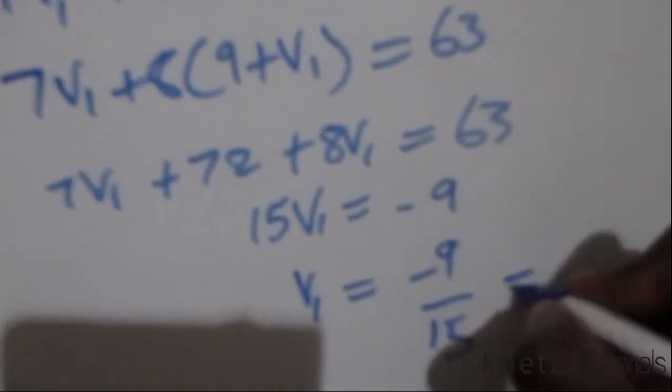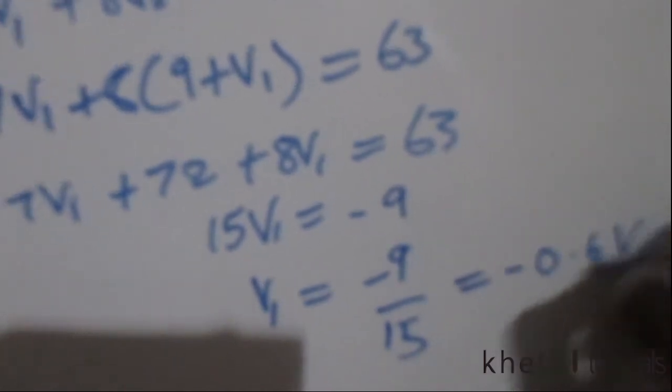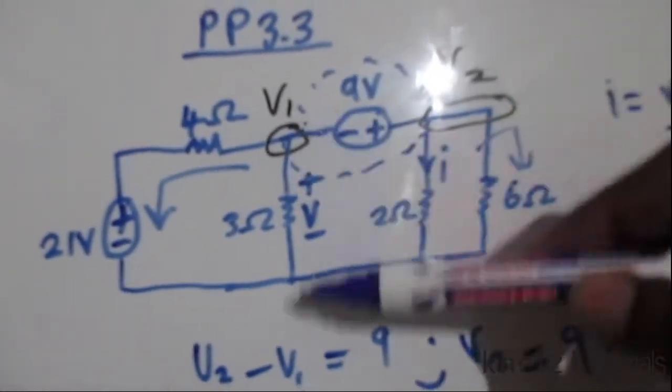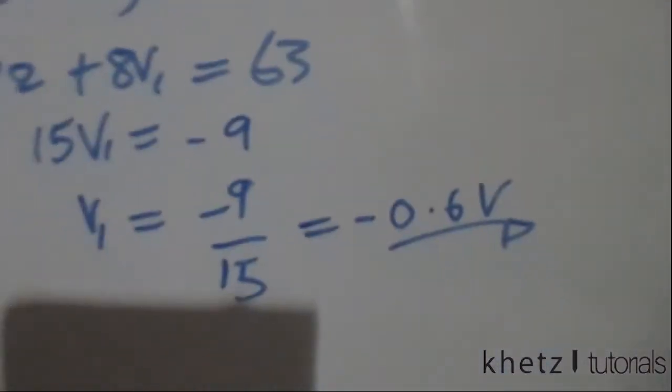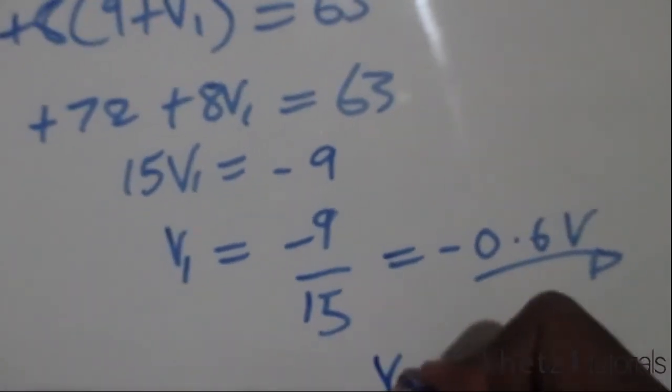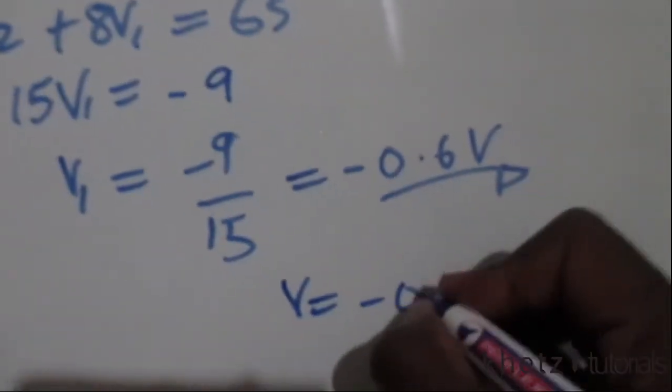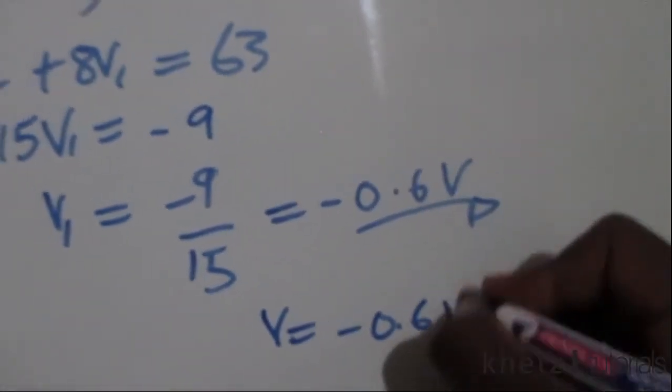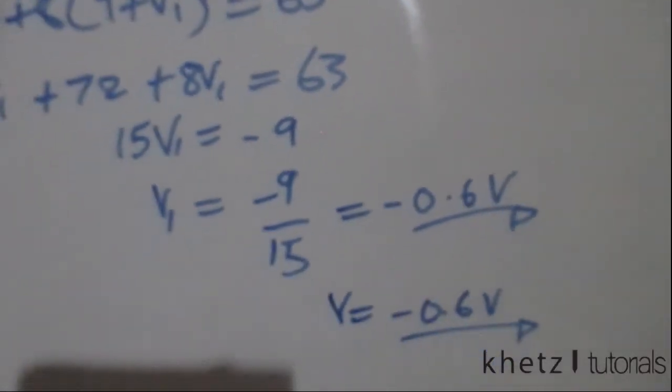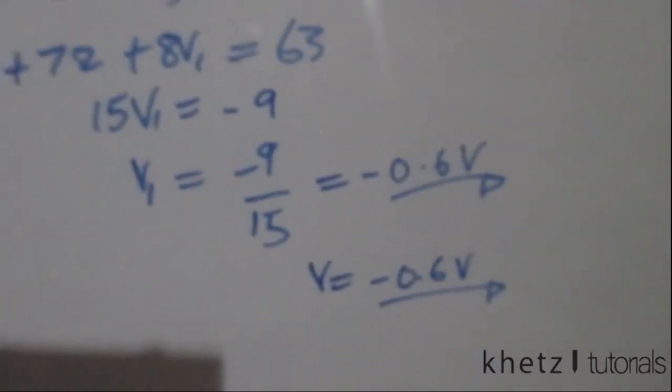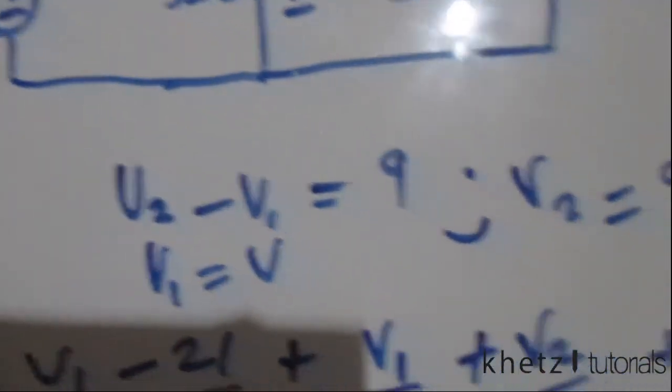Negative 9 over 15, if you put that in your calculator you get negative 0.6 volts. We said v1 equals v, which is basically the voltage across there. So v is essentially equal to negative 0.6 volts. Now given this v, we can substitute it back in this equation.